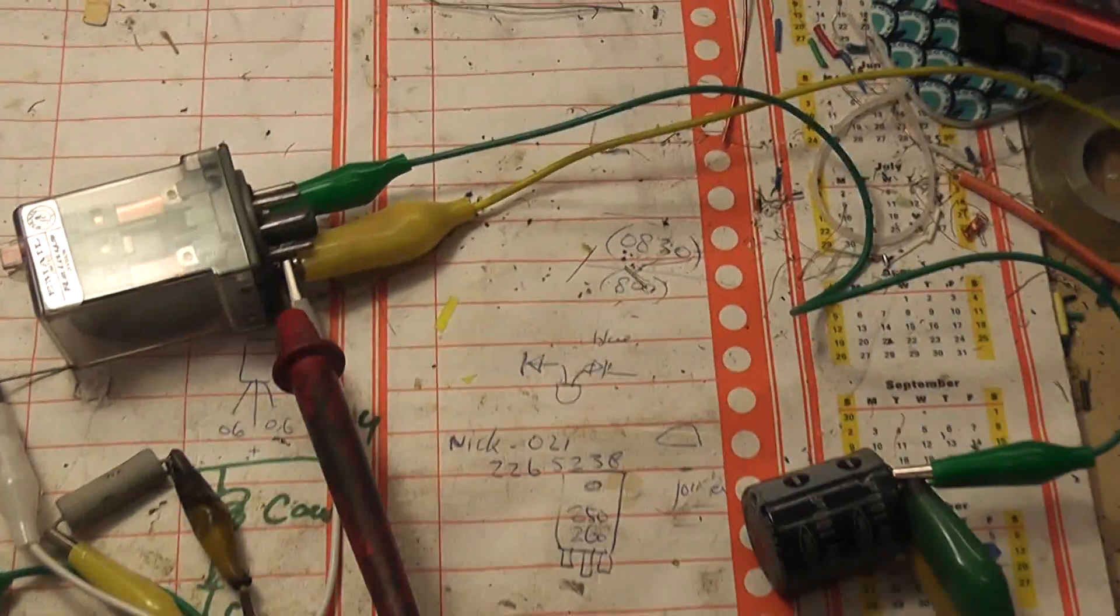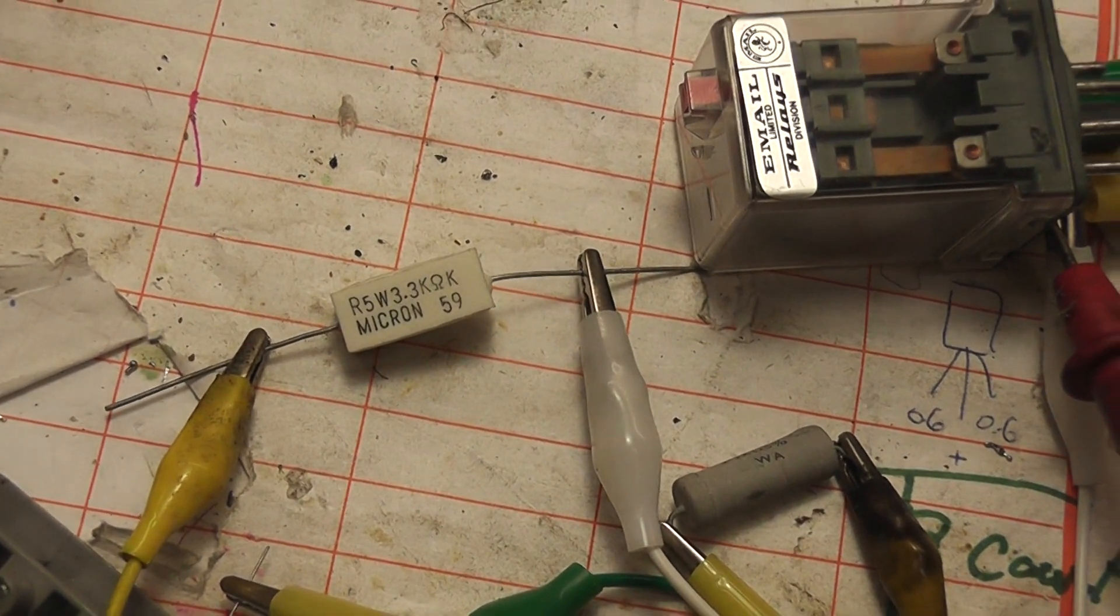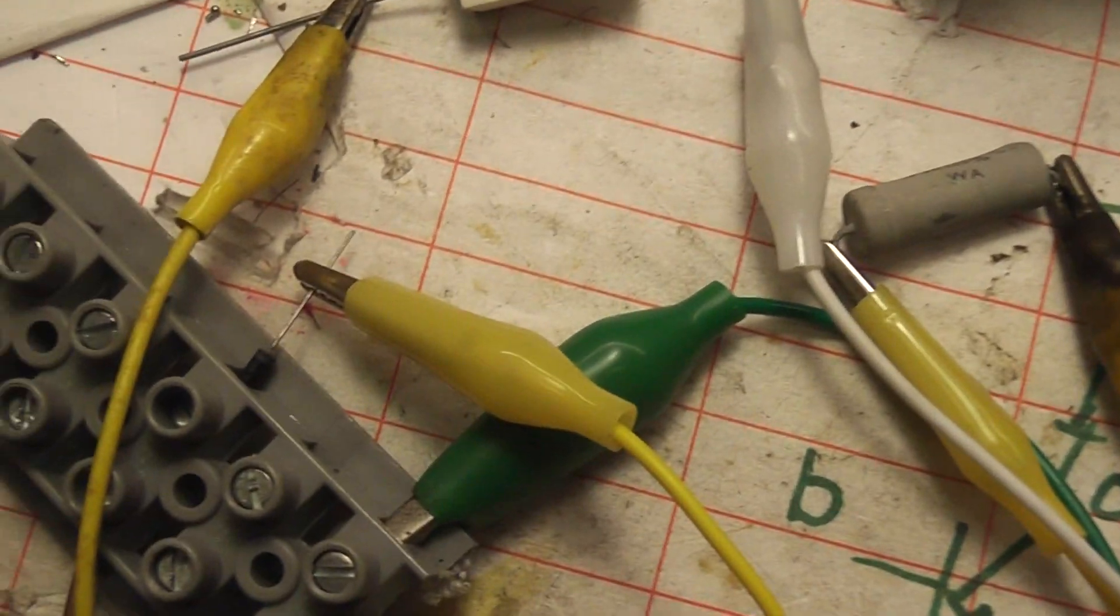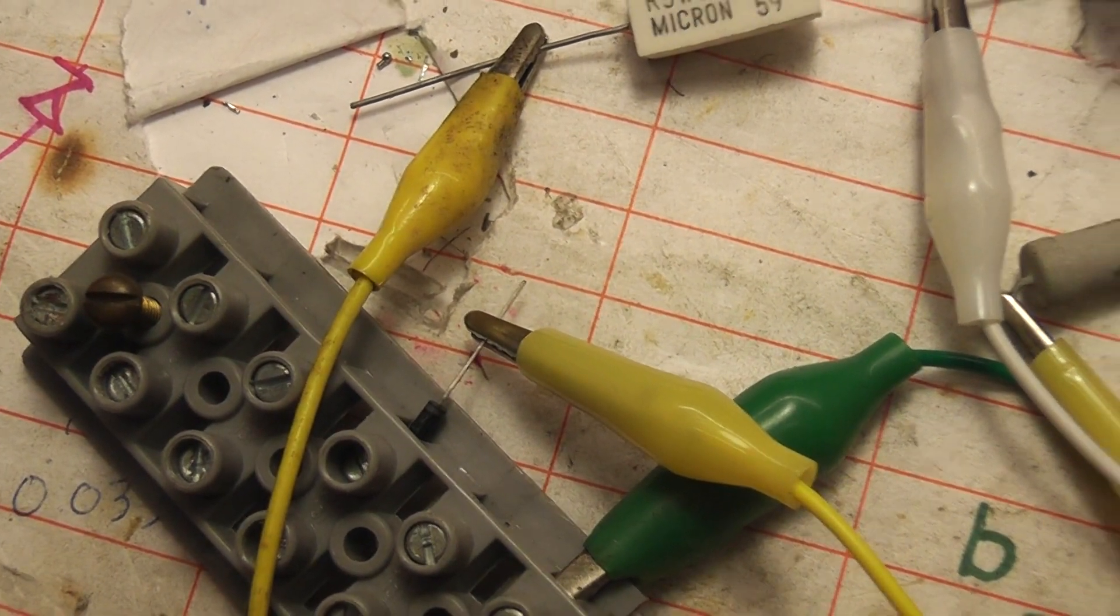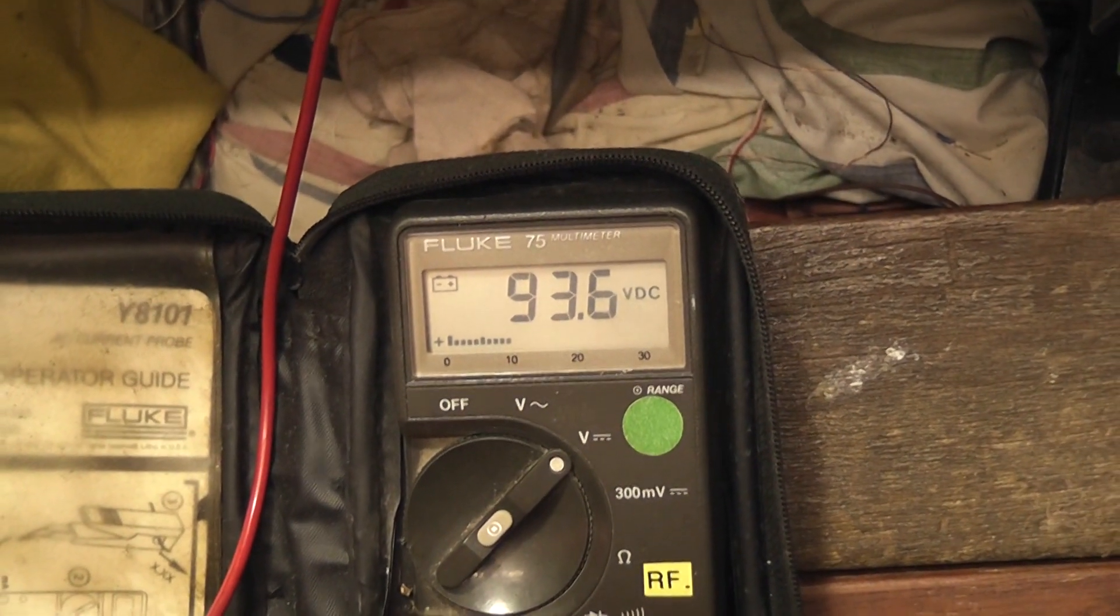So I've got this 110 volt relay here and two 3.3 kilo-ohm 5 watt resistors in series, one 4007 diode in there somewhere. And the relay is quite happy sitting at 93.6 volts, so the relay is not stressed out.